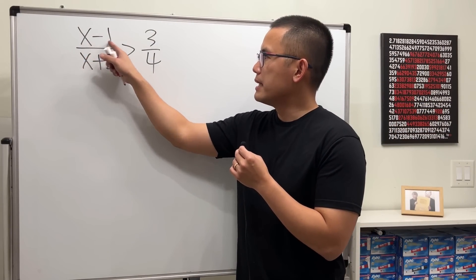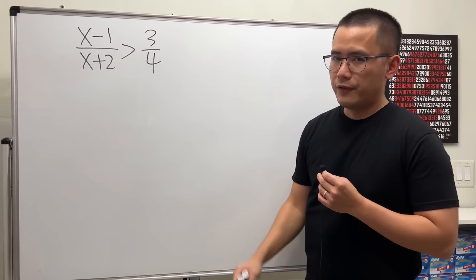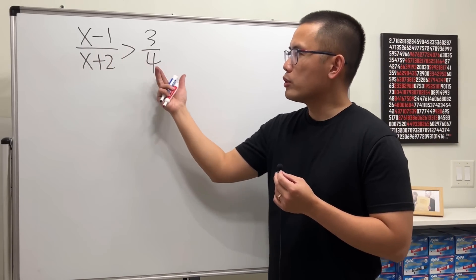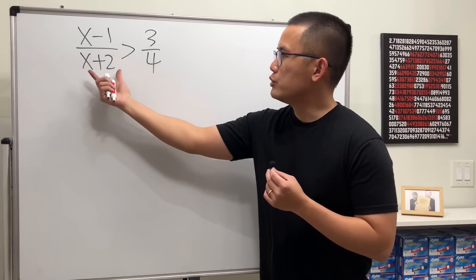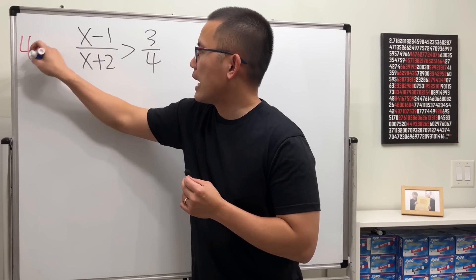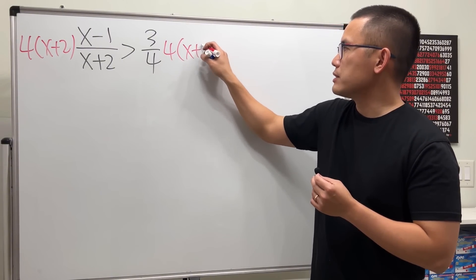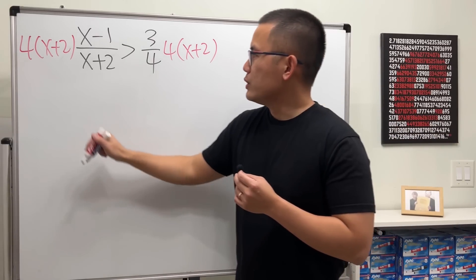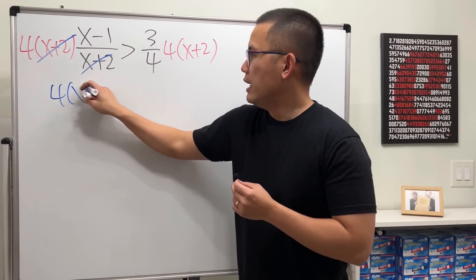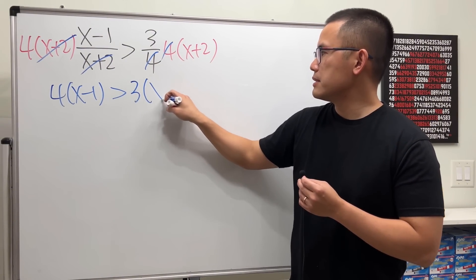We have x minus 1 over x plus 2 greater than 3 over 4. Perhaps we want to get rid of the fractions, and to do so we can multiply both sides by the lowest common denominator — 4 times x plus 2. On the left, 4 and x plus 2 cancel leaving 4 times x minus 1; on the right, the x plus 2 cancels leaving 3 times x plus 2.